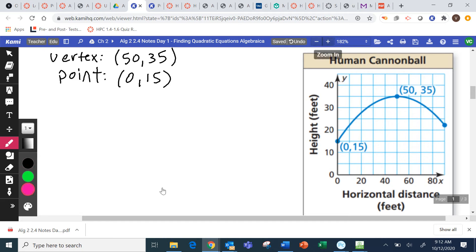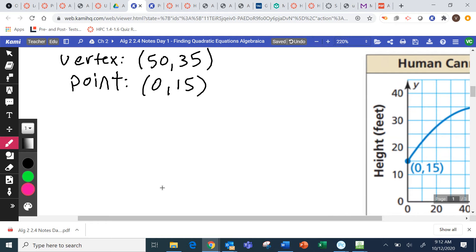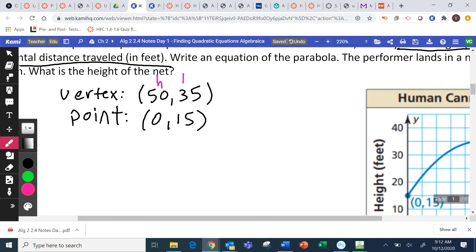Now, I'm going to label their variables. The vertex is always HK, and the point would be XY. They're both XY, but we're going to call the vertex HK. We're going to call the point XY. And because we're talking about the vertex, we're going to use vertex form. Which is Y equals A times X minus H squared plus K.